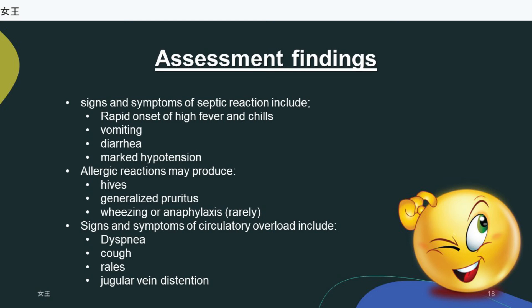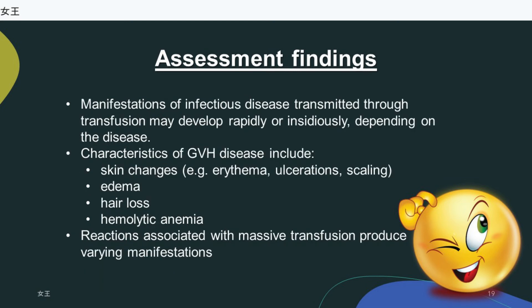Manifestations of infectious disease transmitted through transfusion may develop rapidly or insidiously depending on the disease. Characteristics of graft-versus-host (GVH) disease include skin changes (e.g., erythema, ulcerations, scaling), edema, hair loss, and hemolytic anemia. Reactions associated with massive transfusion produce varying manifestations.